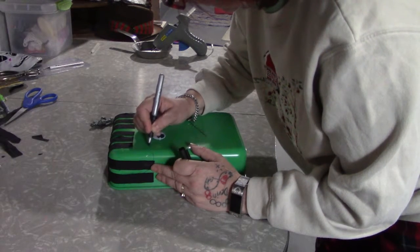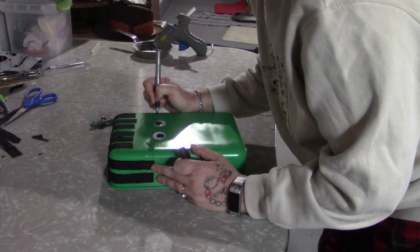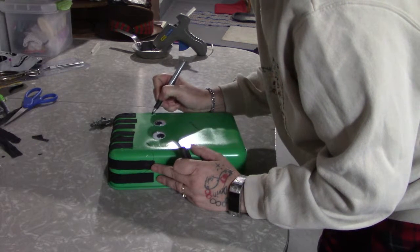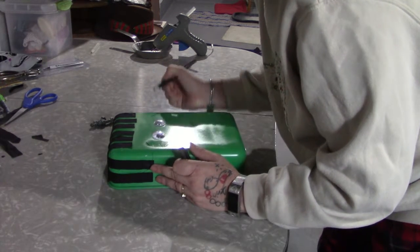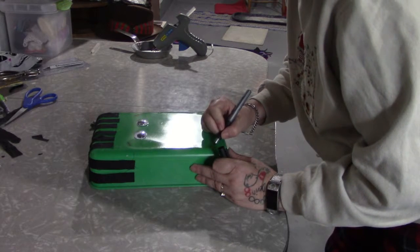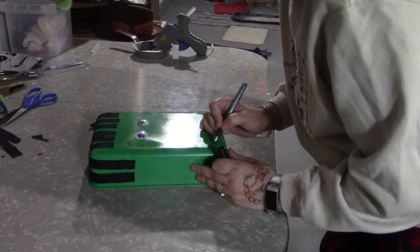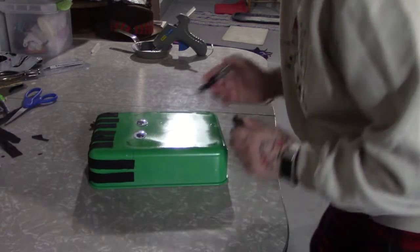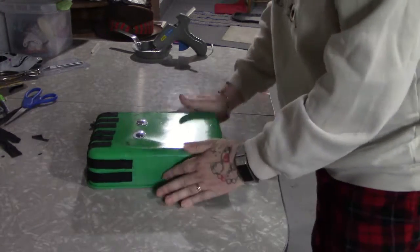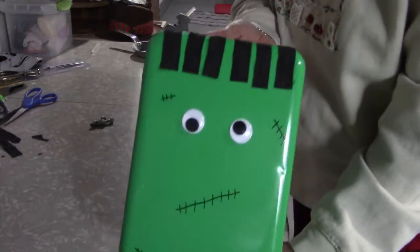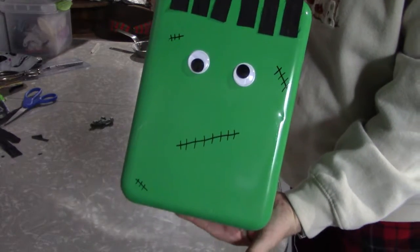And we'll give him a couple little stitches here. Like I said, you can make these any way that you want, anywhere on your little pan that you feel the need to. And there you go, that's all we got done for him.